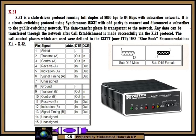Specifications also cover alignment of call control characters and error checking, elements of the call control phase for executing switching services and test loops. The data transfer phase transfers data to the network — any data can be transferred through the network after call establishment is made successfully via the X.21 protocol.